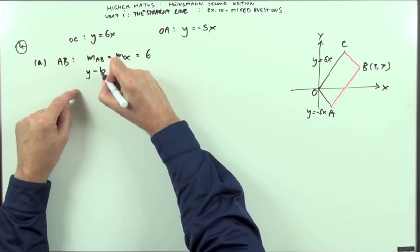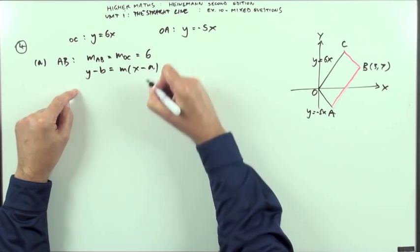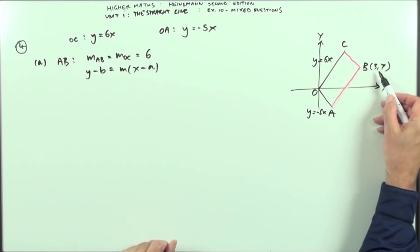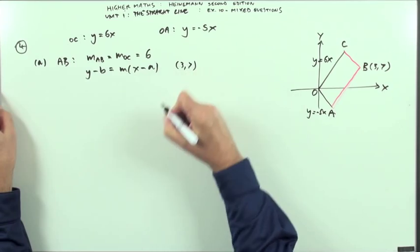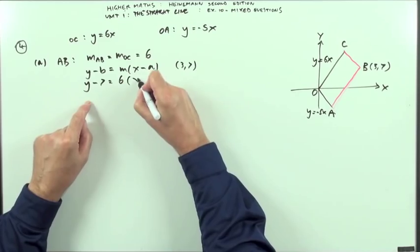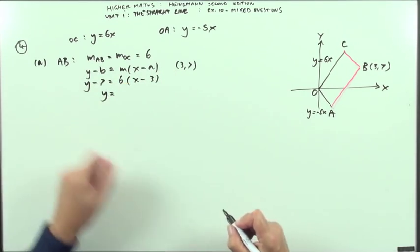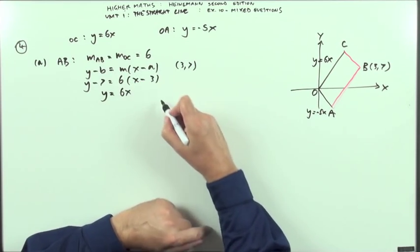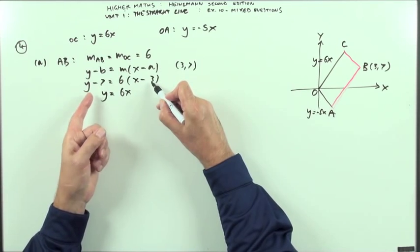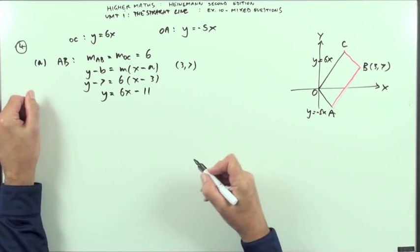So to get the equation of the line, I'll just use that formula, Y minus B equals M times X minus A. I've got the gradient 6 and for the line AB, I know it goes to the point (3, 7). So I've got Y minus the Y coordinate is the gradient times X minus the X coordinate. It's all integers, so I'll put it into that preferred form, Y equals MX plus C. So Y equals 6X minus 18 plus 7. So that's just going to be minus 11.